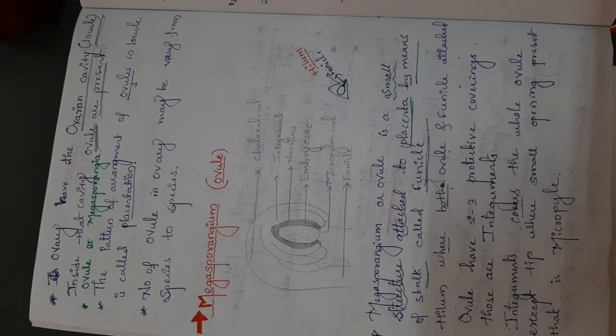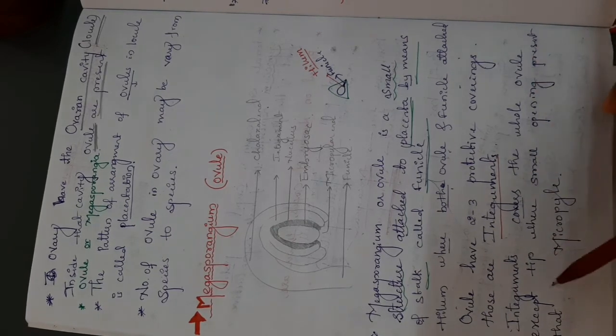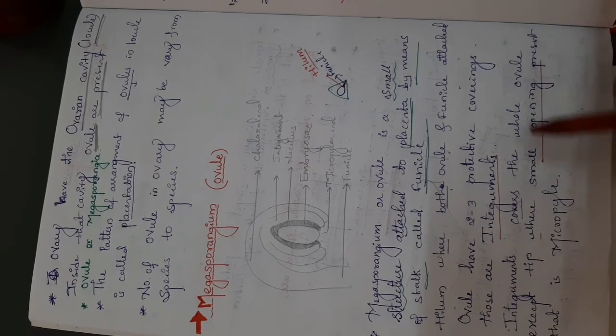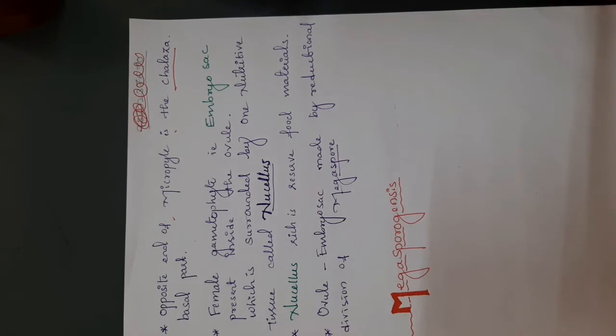In some cases you can see three protective layers: outer, middle, and inner integuments. Usually you can see two integuments — outer and inner. The integuments cover the whole ovule except the tip where a small opening is present, called the micropyle. That end is called the micropylar end. The opposite end of the micropyle is called the chalazal end, which is the basal part.